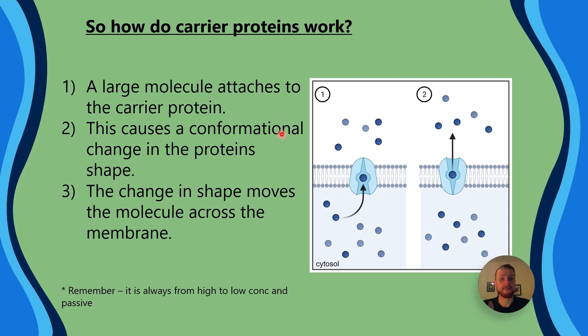And then we're going to have the molecule on the opposite side of the cell membrane. So by changing shape, the carrier protein is going to move the molecule from inside the cell, in the cytosol, where there's a region of high concentration, to outside the cell, in the extracellular fluid, where there's a region of low concentration. Now, I've put a little note at the bottom. So remember, it is always from a high concentration down to a low concentration.